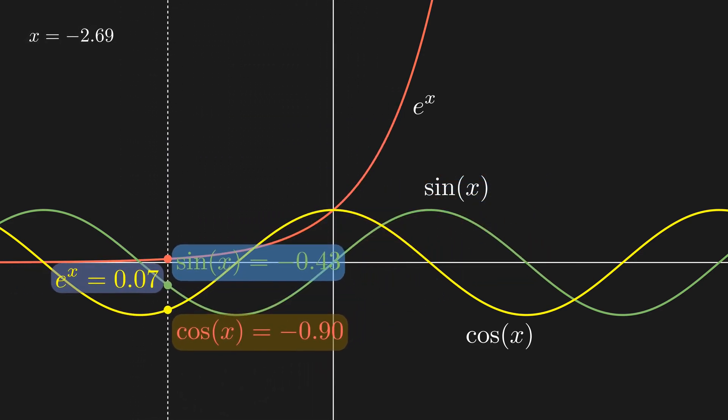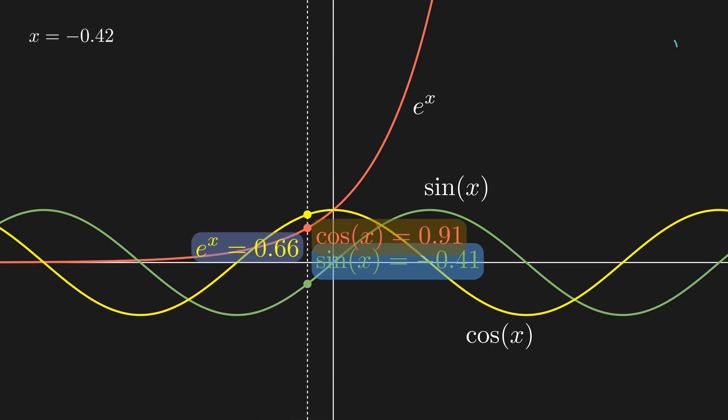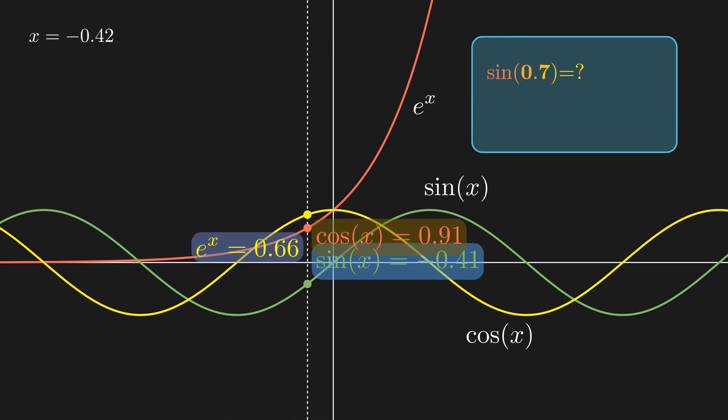This question occupied my mind for a long time. Because when you type sine of 0.7 into a calculator, it instantly gives you the result. Or something like e to the power of 2.7, which seems like a very hard number to compute. Do calculators have some sort of database? Do they look up the values we type in? That can't be true, because I can change these numbers in millions of different ways.